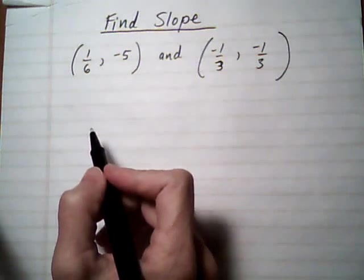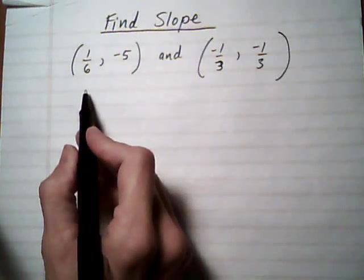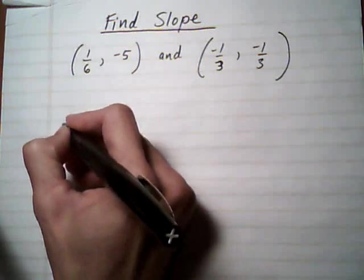First thing you want to do is figure out what you want to call point 1 and point 2, because what we're going to use is the slope formula.